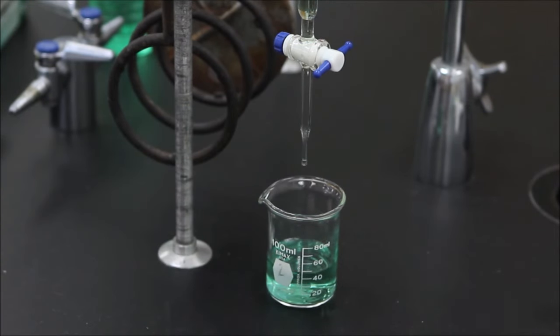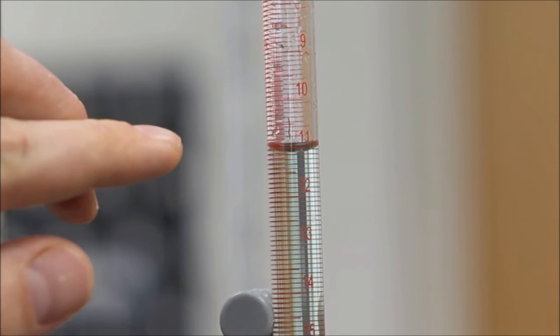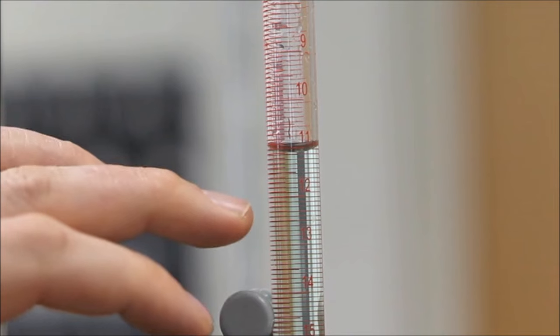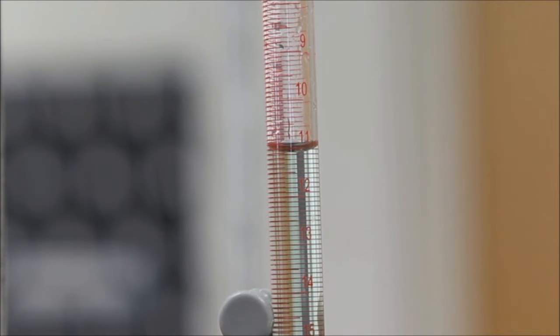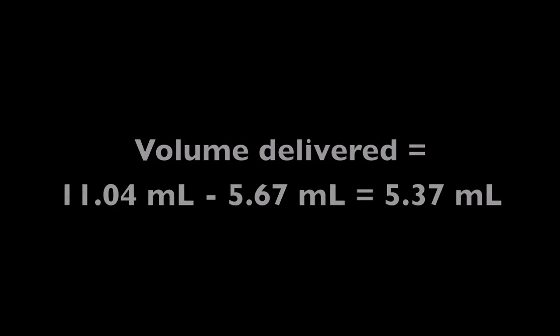After some of the liquid has drained out for the experiment, we are now ready to read the final volume of the burette. The meniscus is now between the 11 and 11.1 milliliter marks, and finally, estimating to the hundredths place, I record the final volume as 11.04 milliliters. The volume delivered in my experiment, then, is the difference between these two readings, 11.04 and 5.67, or 5.37 milliliters.